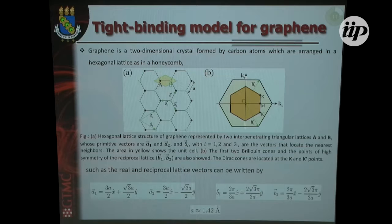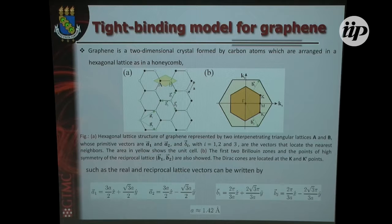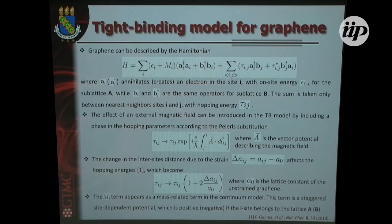As everyone here knows, graphene has two atoms in the unit cell and can be described by two primitive vectors. It has a honeycomb lattice — it's not a Bravais lattice, and so on. Our model in both works is the tight-binding model. Here you have the on-site energy, and this part corresponds to the hopping with nearest-neighbor atoms.